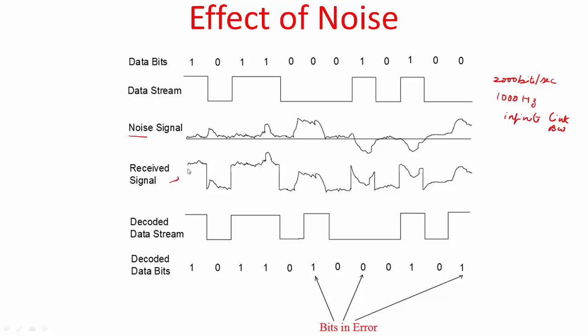Now if you decode this received signal, you sample at the middle of the bit interval and find out what the voltage levels are. You figure out that one corresponds to high voltage, zero corresponds to low voltage, and you decoded this data stream. You see that you have made some errors, the errors are in these locations where the noise happens to peak. Now you must be wondering, I provided infinite link bandwidth and still I am not able to recover the signal. What's happening?